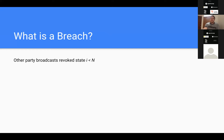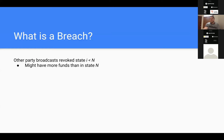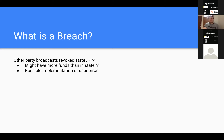A breach is when, after we've agreed on some state N, the remote party broadcasts a state that is less than N. These have been revoked and we've given up a commitment secret allowing the other person to spend them. Reasons include having more funds in that earlier state, malicious cheating, implementation errors, or user errors — like restoring from old backups. Most cases seen in the wild have been user error.